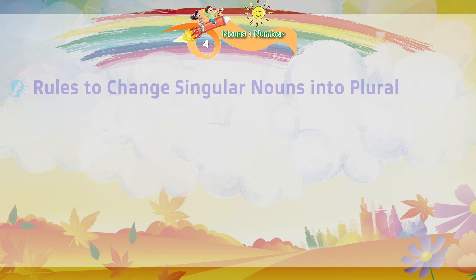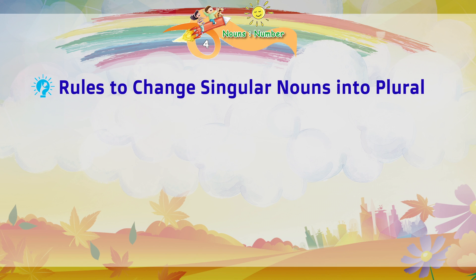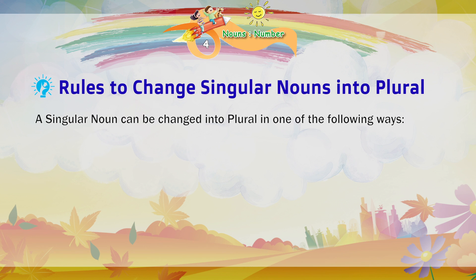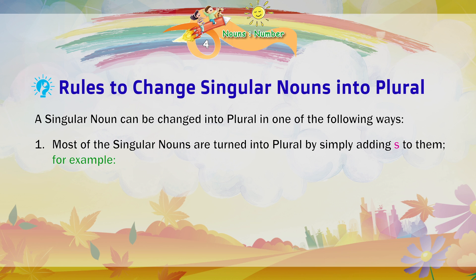Rules to change singular nouns into plural. A singular noun can be changed into plural in one of the following ways. Most of the singular nouns are turned into plural by simply adding S to them. For example: